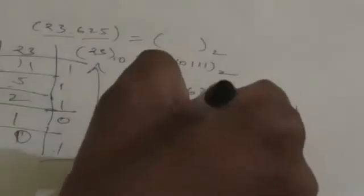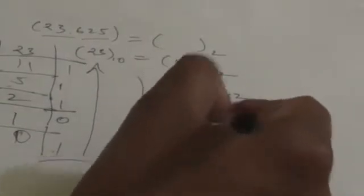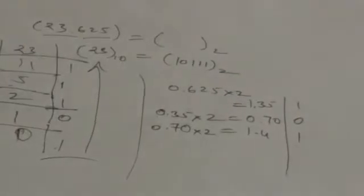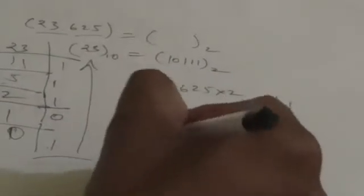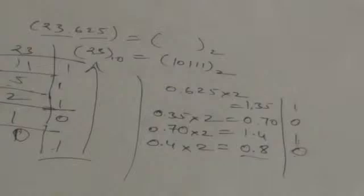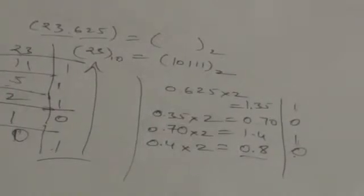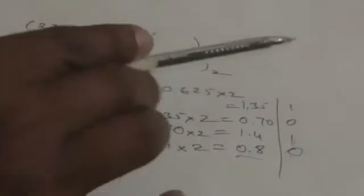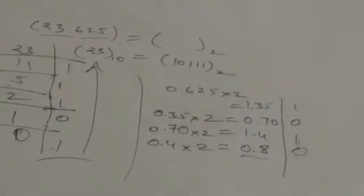So again I have to multiply the new fractional part by 2. I get 1.4. The integer part is 1 and fractional part is 0.4. When I again multiply it by 2 the result is 0.8. The integer part is 0 and fractional part is 0.8. I have to continue this process until the fraction becomes 0 or until the number of digits has sufficient accuracy. I think these four digits provide sufficient accuracy, so I will leave the process here.